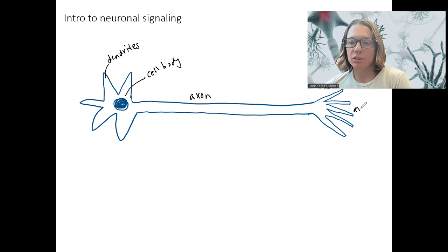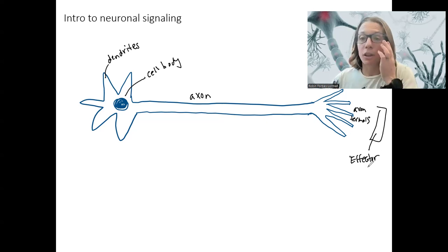So there's axon terminals, the ends of the axon, and down here there's some other organ. Let's draw it as just a big box here. This is our effector. Could be another neuron, could be muscle. We'll talk more about that.